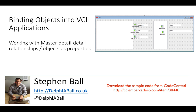Hello, this is Stephen Ball and this is the second part of a two-part series on master-detail relationships with objects and how we can bind to those using Visual Live Bindings. In the first session we looked at a simple object with a detail object — a foo object that had a foo2 object — and as we scrolled through a list of foo objects we were able to update the foo2 object details on screen using the master-detail element.